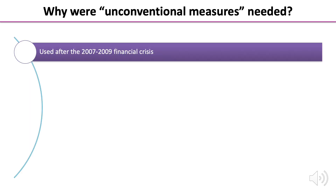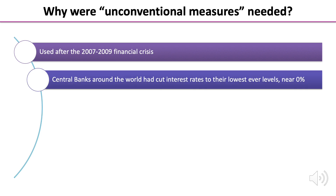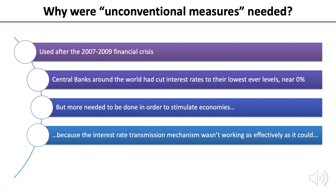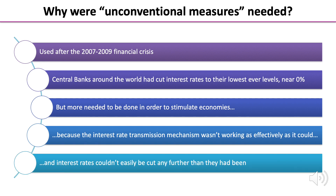We know it was used after the 2007-2009 financial crisis and we also know that central banks around the world cut interest rates to their lowest ever levels, near 0%. So the main firing mechanism — the change in interest rates to manipulate monetary policy — hadn't really worked, and therefore central banks needed another lever in order to stimulate economies because the interest rate transmission mechanism wasn't working as effectively as it could. Changes in aggregate demand weren't being influenced by changes in interest rates, and interest rates couldn't easily be cut any further than what they had already been.